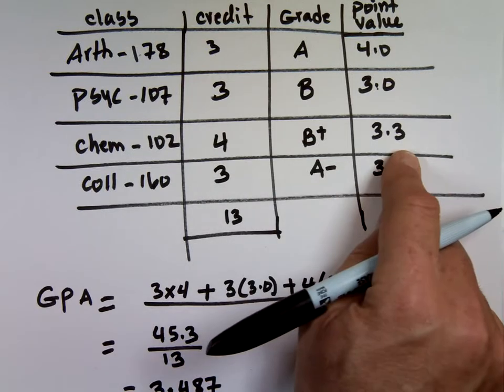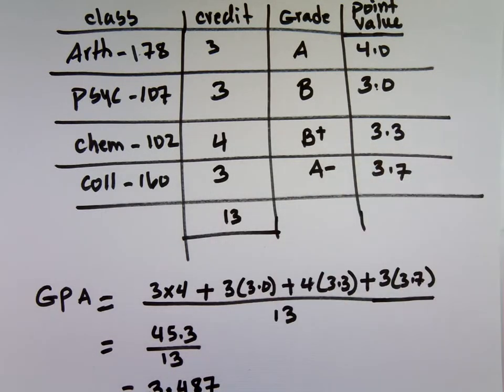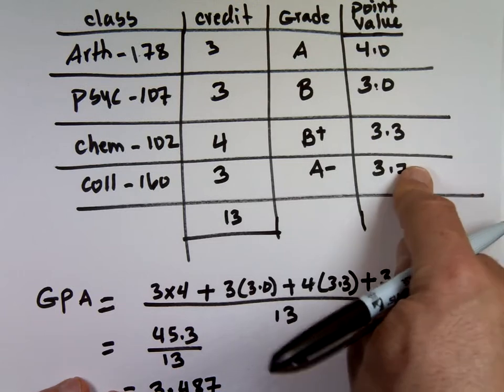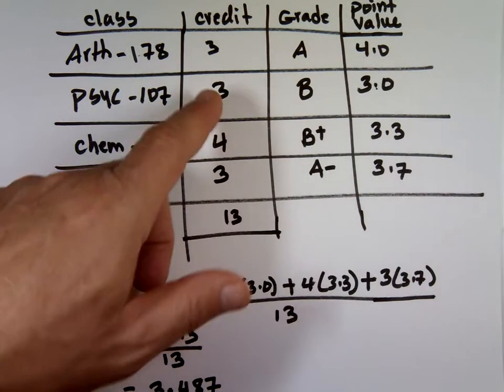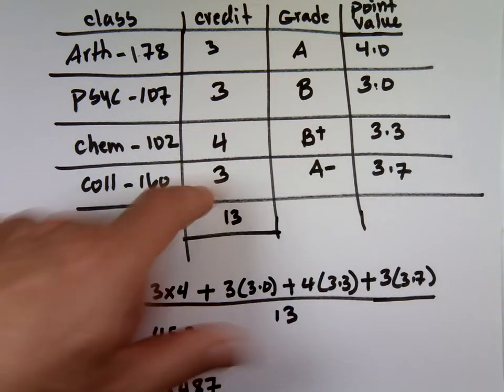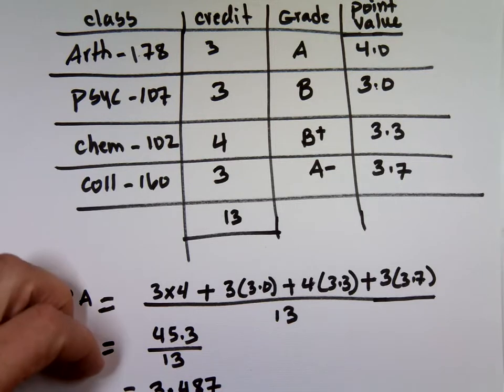You are above B plus average. 3.3 is a B plus. 3.7 A minus. You're halfway between B plus and A minus. That's your overall progress. So, because they have different weight, you can't just add these and divide by four. You've got to multiply each one by the percentage. Three credits times four, three times three, four times 3.3, three times 3.7, divided by the number of credits that you've taken. And that's how we calculate your grade point average every single semester. Now you know it.